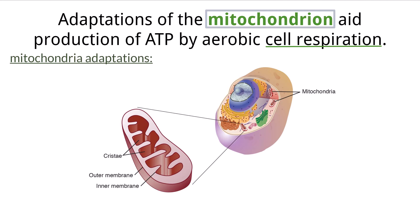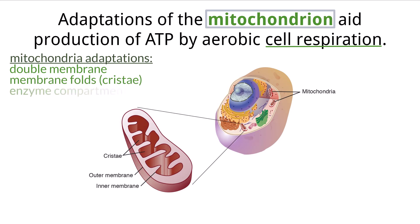The adaptations include a double membrane, internal folds of the membrane called cristae, and the separate compartmentalization of enzymes and substrates needed for the Krebs cycle that exists within the internal matrix of the organelle.